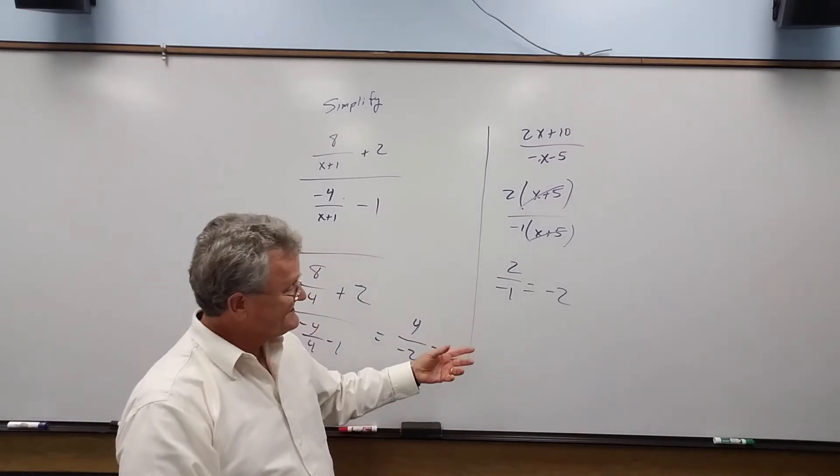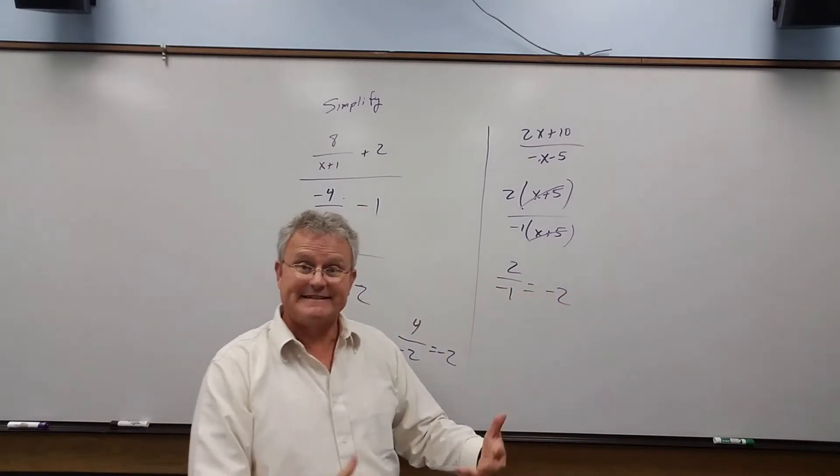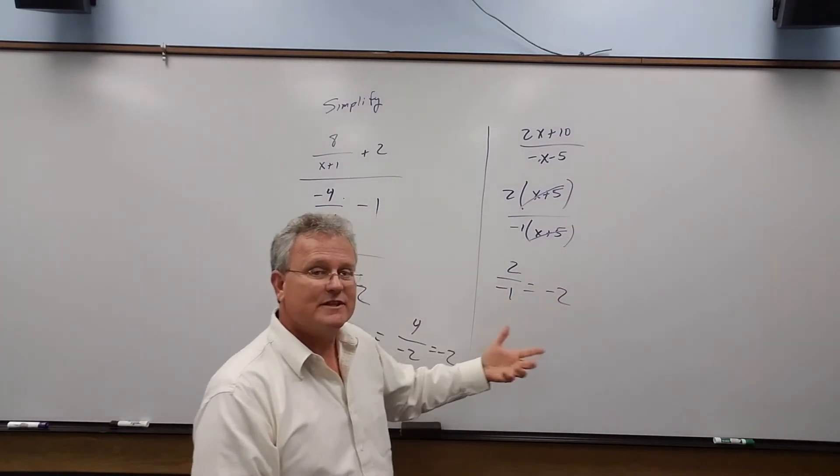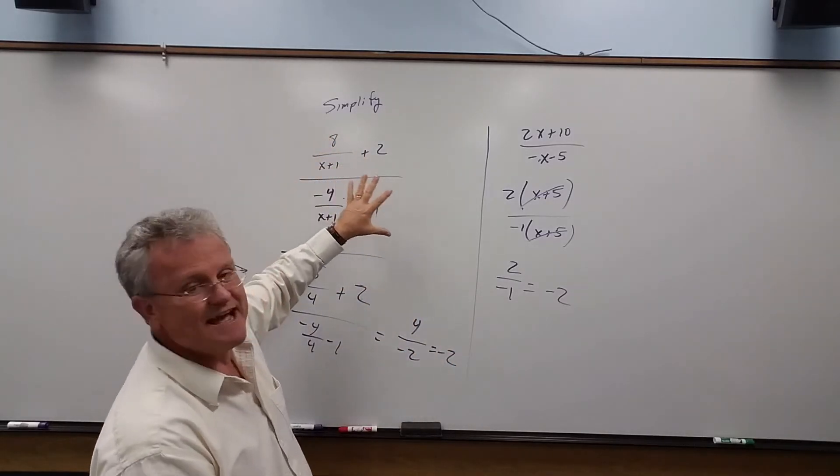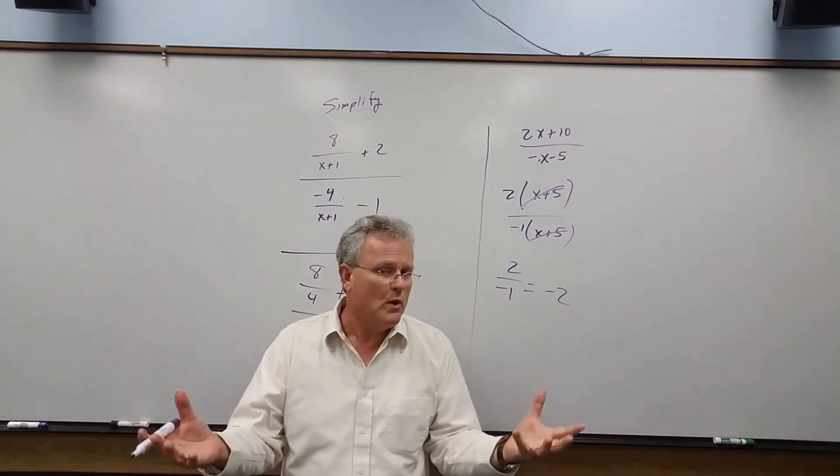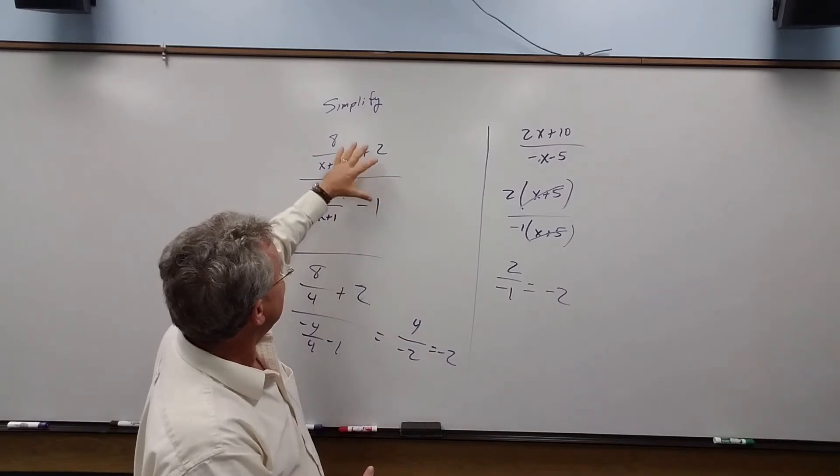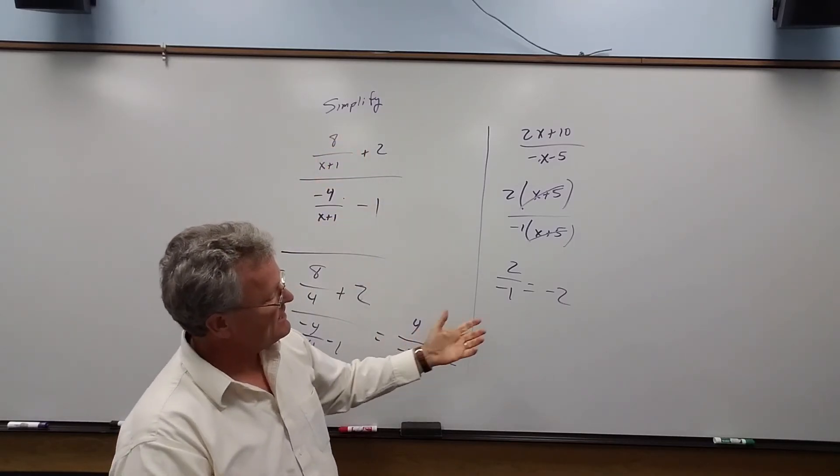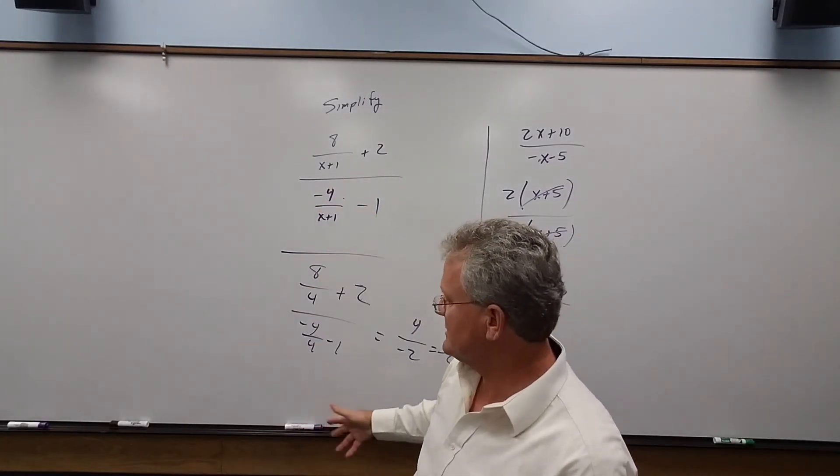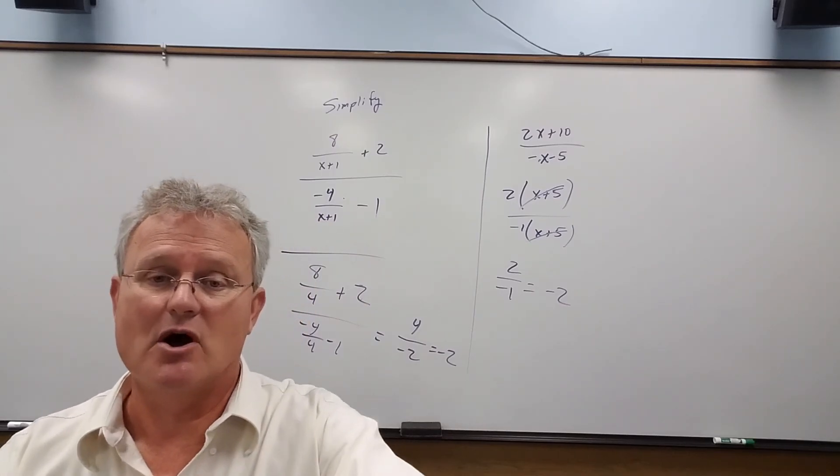So the point here is this is simplified - it's simpler and easier to work with. That's the purpose when we have a complex fraction: we want to simplify it to make our lives easier. In this case, it's always equal to negative 2, and it's nice to illustrate that by picking different values of x and showing that's what always happens.